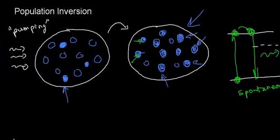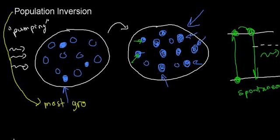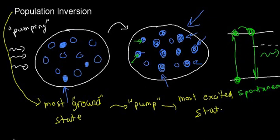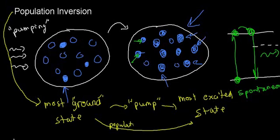So this is population inversion. By pumping the system — just the essentials here — I start with most molecules in the ground state, then I pump the system, and achieve a situation where most are in the excited state. Going from most in the ground state to most in the excited state is called population inversion, as depicted here — these are the two stages.